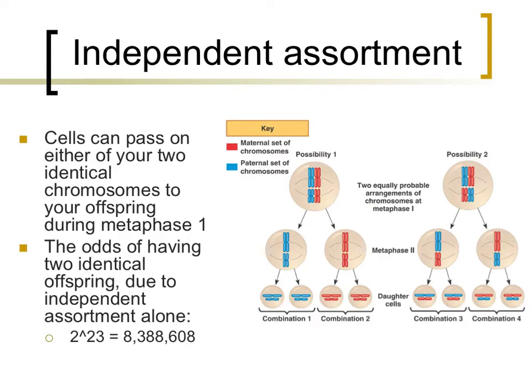Since humans have 23 pairs of chromosomes, the likelihood of one parent passing on the same 23 chromosomes to their offspring would be like flipping a coin 23 times and ending up with 23 heads in a row. The probability of doing so could be expressed mathematically as 2 to the 23rd power, which is about 1 in 8,388,608. When you take into consideration these incredibly long odds, in addition to the endless possibilities with crossing over, there is virtually no chance that two humans could be born with the exact same genetic information, unless they were identical twins.